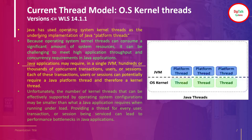Providing a thread for every user transaction or session being serviced can lead to a performance bottleneck. Each request requires a single thread for execution. When you see stuck thread problems, if one operating system thread gets stuck, it is not able to process any request. If there are multiple stuck or hogging threads, all those threads get blocked, holding a lot of resources from the operating system. This creates significant performance problems because every thread is consuming resources from the OS — a lot of overhead on your operating system and the thread model.